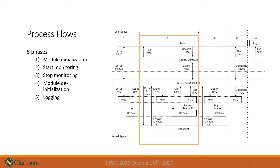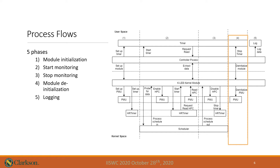During this time, the controller process will also periodically extract the data from the kernel module to free up kernel memory. The third phase is when the module detects that the process got scheduled out — the module will cancel the timer and disable the PMU to stop collecting the data. The fourth phase is when the monitored process exits, or the user issues the command to stop monitoring. The controller process will send a signal to de-initialize the module and then extract the last batch of data from the module and free up the memory.